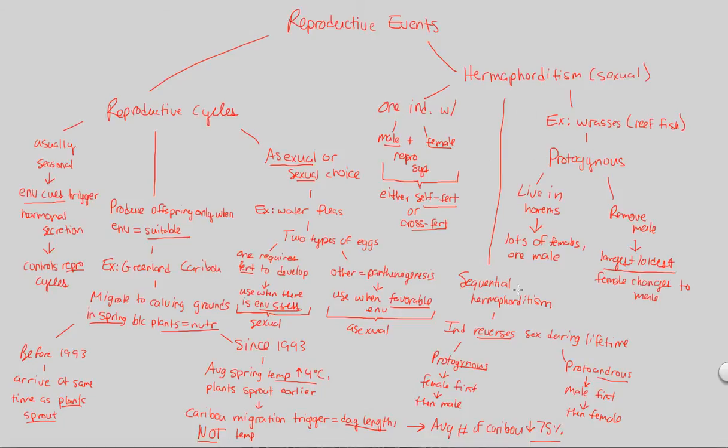And that's our look at sequential hermaphroditism, a specific type of hermaphroditism. Again, remember, it's sexual because you need to have fertilization here. You need to have meiosis, and you need to have a fusion of gametes. And that's a final look at our reproductive events. We're now going to be looking very specifically and beginning our direct look at the male reproductive system in humans, now that we've got this background and introduction out of the way.